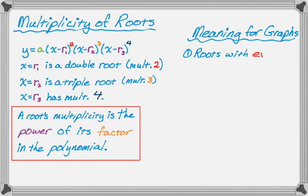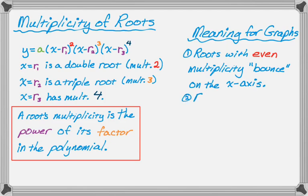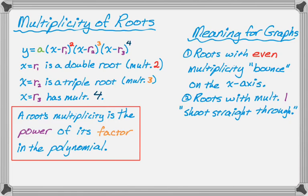If a root has an even multiplicity, every root with an even multiplicity is just going to bounce off of the x-axis, or bounce on the x-axis. If the root has a multiplicity of 1, that's going to look kind of linear, and I say it shoots straight through. So if the multiplicity is 1, it's going to shoot straight through the axis at that point, no curving, just straight through.